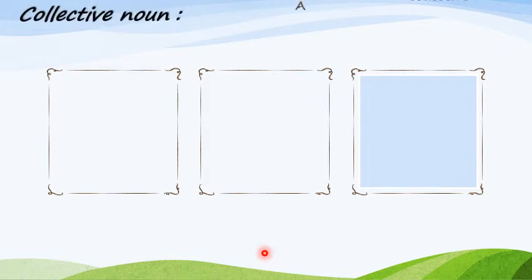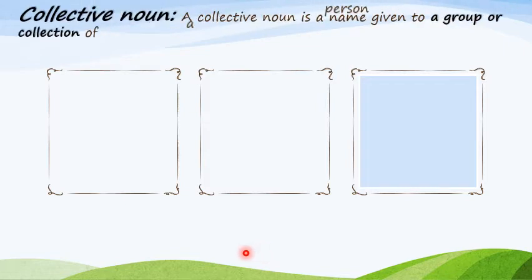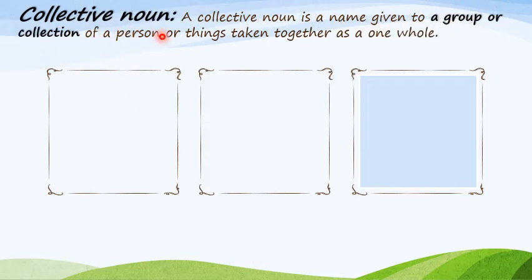Now, let's talk about collective nouns. So, children, what is a collective noun? A collective noun is a name given to a group or collection of persons or things taken together as one whole. When we talk about a particular group of a person or of a thing, we use collective nouns.